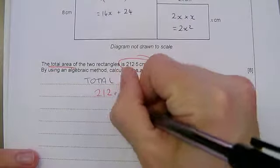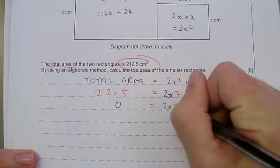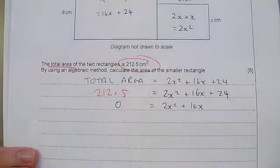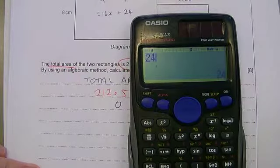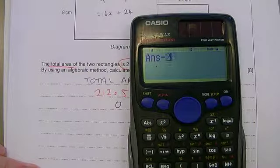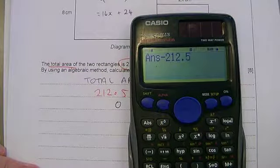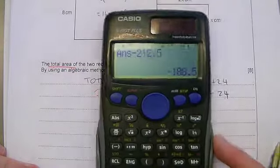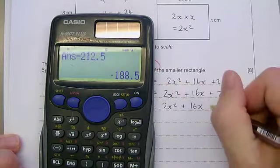We're going to factorize it, but before we do, we must get that equal to zero. We need that thing to be gone. So leaving nothing on this side, I'm still going to have 2x squared plus 16x, but I need to stick into my calculator. So 24 take away 212.5, which is minus 188.5.